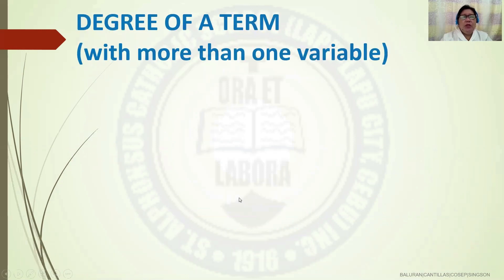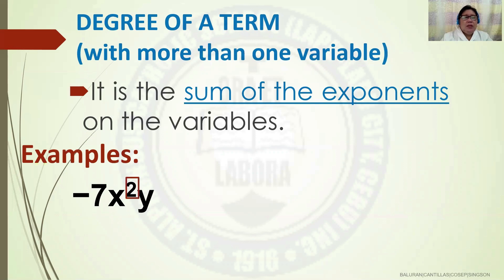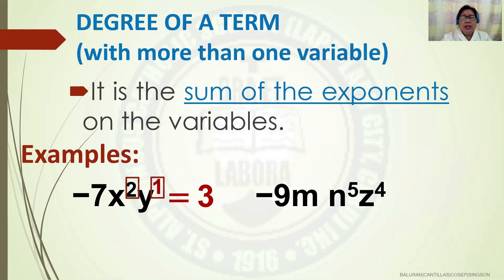Let us have the degree of a term with more than one variable. It is the sum of the exponents on the variables. Example: negative 7x squared y — the exponent of x is 2, the exponent of y is 1, so 2 plus 1 equals 3; the degree of the term is 3. Next example: negative 9 m n raised to exponent 5 z raised to exponent 4 — the exponent of m is 1, n is 5, z is 4; adding 1 plus 5 plus 4 gives 10, so the degree of the term is 10.